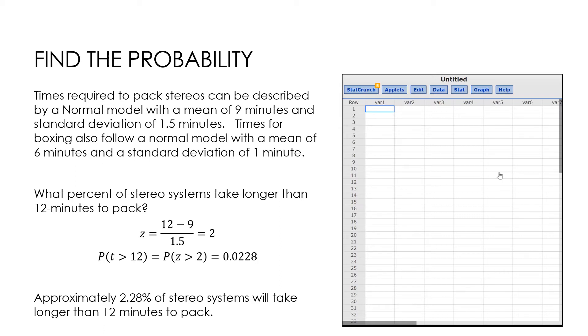It says times required to pack stereos can be described by a normal model with a mean of 9 minutes and a standard deviation of 1.5 minutes. Times for boxing also follow a normal model with a mean of 6 minutes and a standard deviation of 1 minute. What percent of stereo systems take longer than 12 minutes to pack?